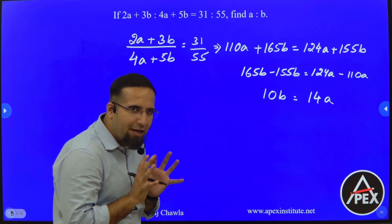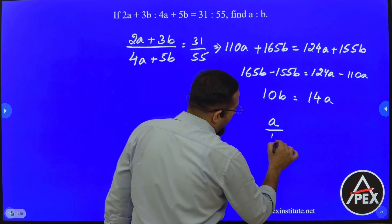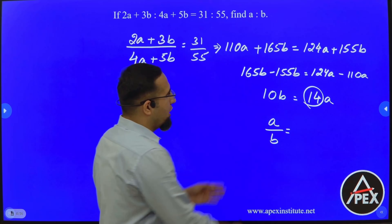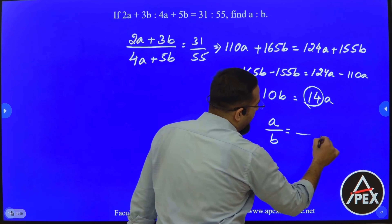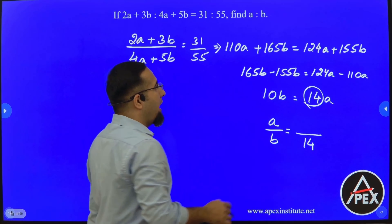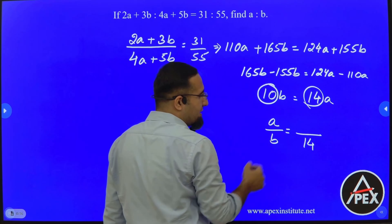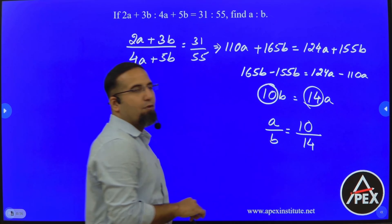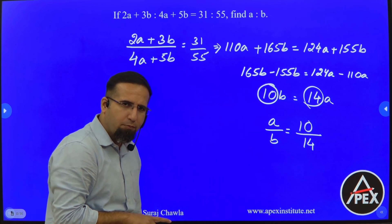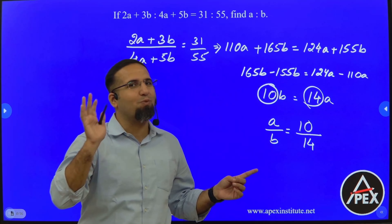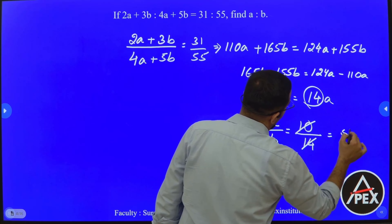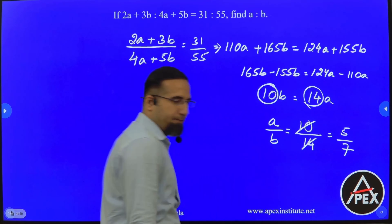So I have 10B equal to 14A. If I want the ratio of A is to B — the coefficient of A is 14, so 14 comes as denominator when I cross multiply, and the coefficient of B is 10, so 10 comes on the numerator. Now 10 by 14 is not the simplified form — as we learned, ratios must be in the most simplified form. So cancelling by 2, this becomes 5 is to 7.